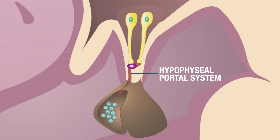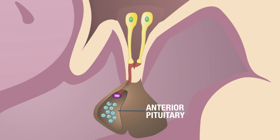The hypophyseal portal system is basically a bridge between the hypothalamus and the pituitary gland, specifically the anterior pituitary. So thyrotropin-releasing hormone will travel through the hypophyseal portal system — this capillary bed — and into the anterior pituitary.